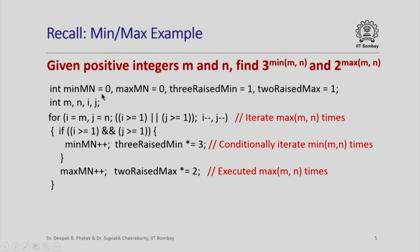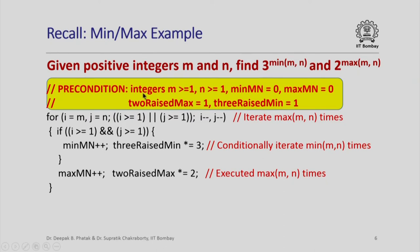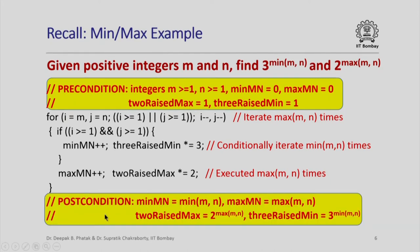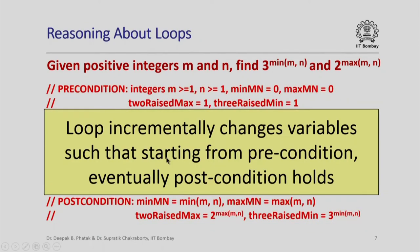These variable declarations and initializations can be captured by a precondition: m >= 1, n >= 1 (the problem specifies they must be positive), min_mn and max_mn both initialized to 0, and 2_raise_to_max and 3_raise_to_min both initialized to 1. After executing the loop, I want the postcondition to hold: min_mn equals the minimum of m and n, max_mn equals the maximum of m and n, 2_raise_to_max equals 2 raised to max(m,n), and 3_raise_to_min equals 3 raised to min(m,n). The loop incrementally changes variable values to move from the precondition state to the postcondition state.